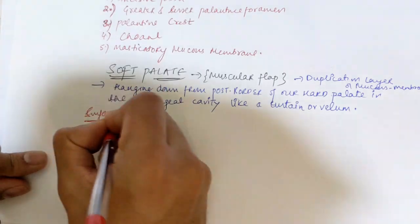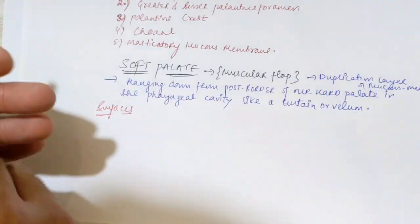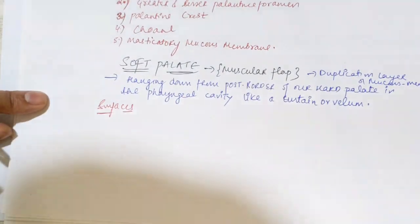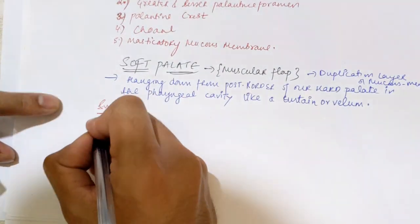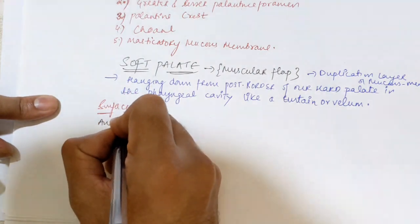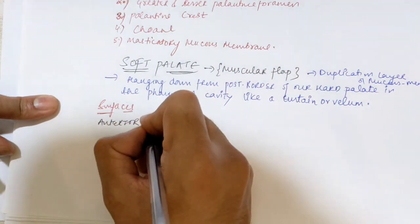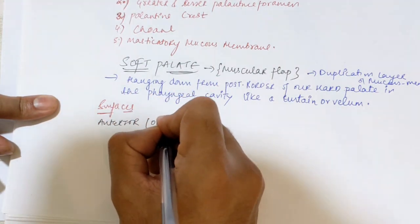Now, what are the surfaces of the soft palate? We have two surfaces. The first is the oral surface, or we can call it the anterior surface.